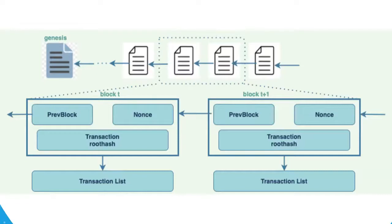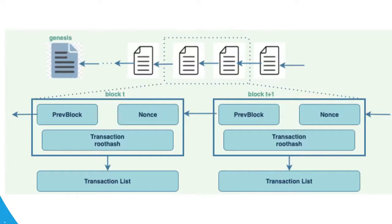The area you can see on my screen represents a block in a blockchain. These are some of the key fields recorded in a block — not limited to only these. One key field is the previous block, which contains the address of the previous block. This address is hashed using the cryptographic algorithm SHA-256, which we will explain in coming modules. For now, you can assume this is a secure cryptographic algorithm. The previous block field contains the hash of the previous block.